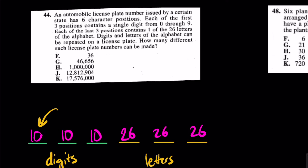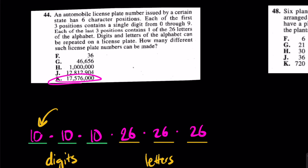When you multiply all of these through, you have 10 times 10 times 10 times 26 times 26 times 26. The answer is K. This slot method I use is huge — I use it every single time for questions like this.